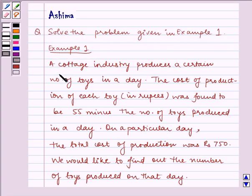Example 1 is given as a cottage industry produces a certain number of toys in a day. The cost of production of each toy in rupees was found to be 55 minus the number of toys produced in a day.